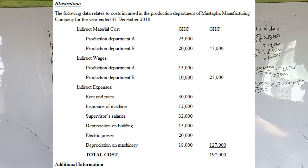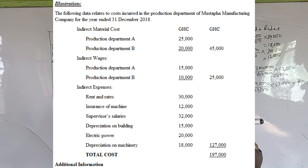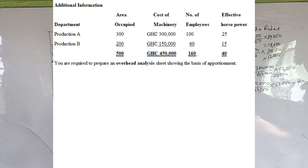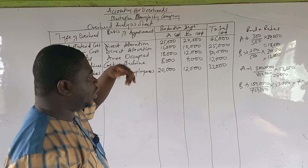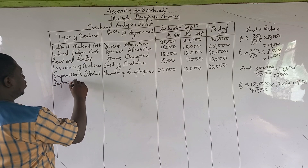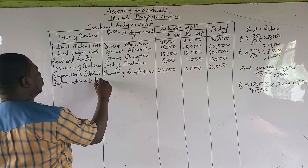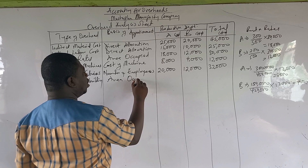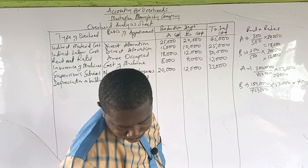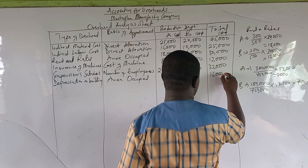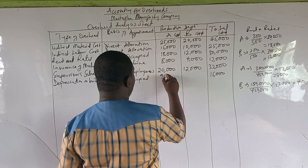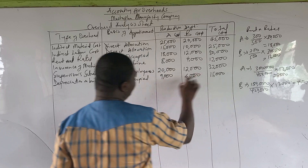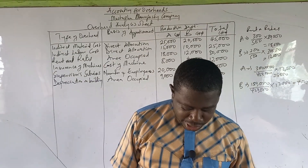Depreciation on building: the most appropriate basis is area occupied. The ratio is 300 to 200. Using this ratio on the total of 15,000: Department A gets 9,000 and Department B gets 6,000, giving a total of 15,000.